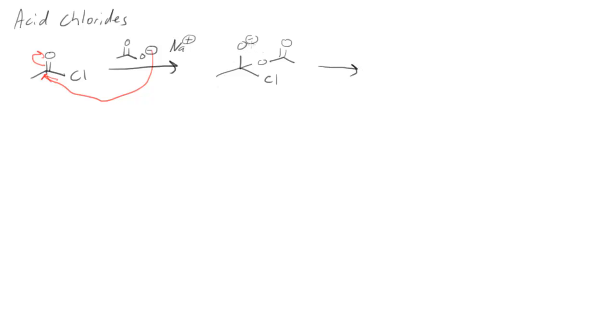So the standard question arises again. Do we have a good leaving group? And the answer, of course, is yes. So this electron pair comes back down to reform the carbonyl and the chloride leaves.